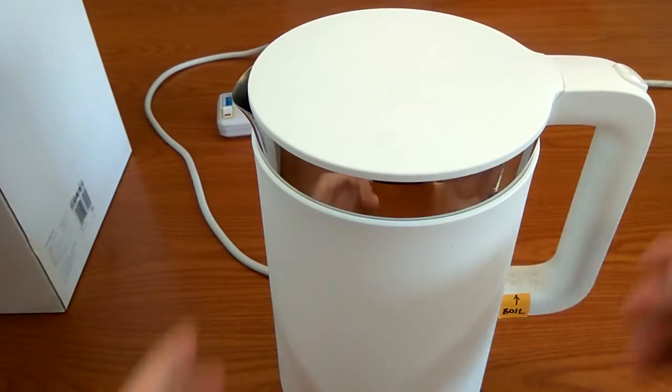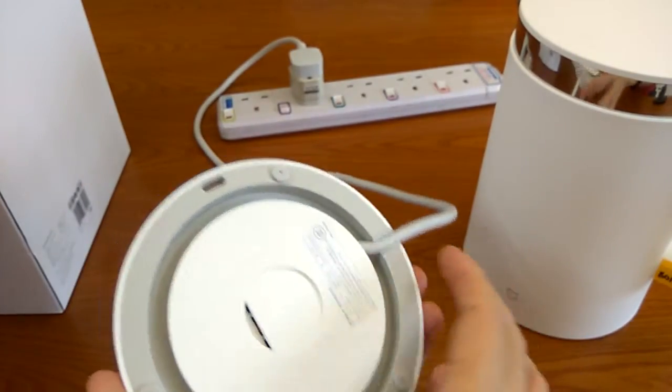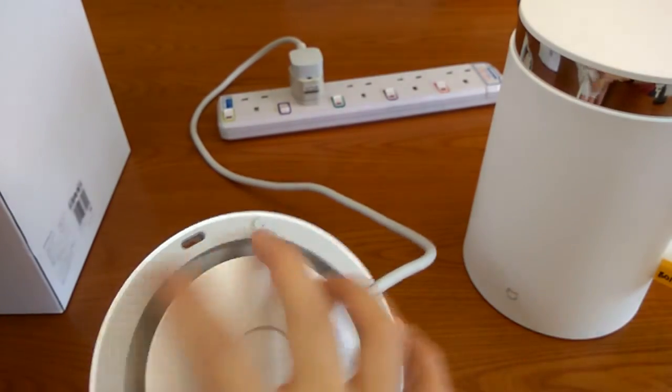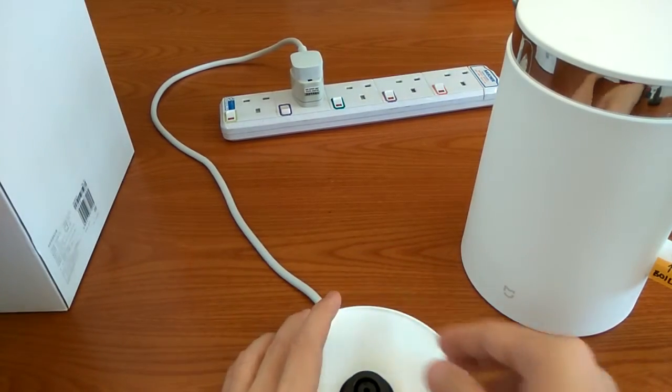Let's take a look at the kettle itself. This is the base. The wire can be kept under this base over here. It's quite short, about 60 to 70 cm.